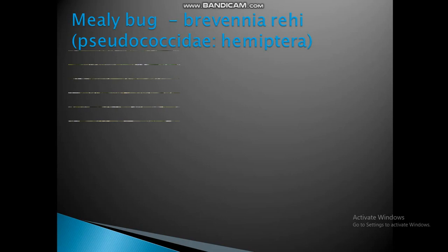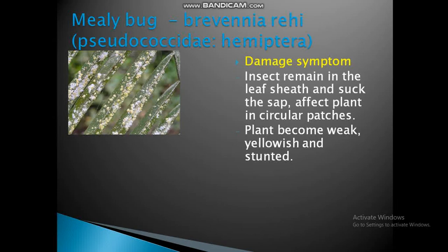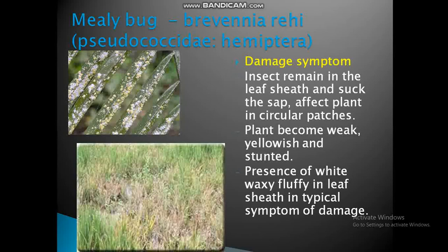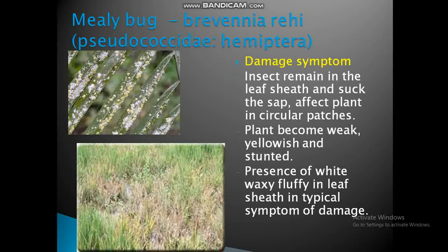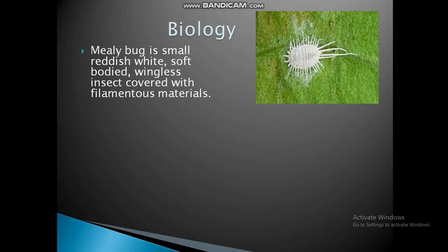Mealybug, Brevennia rehi, family Pseudococcidae, order Hemiptera. Damage symptoms: insects remain in the leaf sheath and suck sap. Affected plants show circular patches, become weak, yellowish, and stunted. Presence of white waxy floppy material in the leaf sheath is the main damage symptom and typical symptom of mealybug damage.